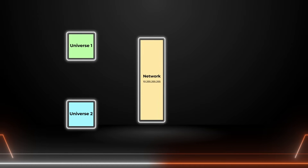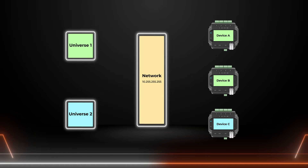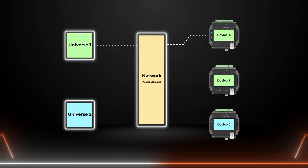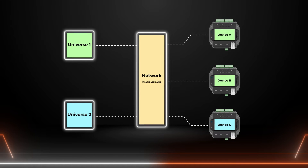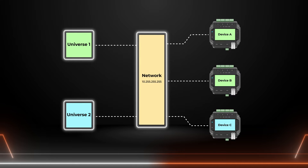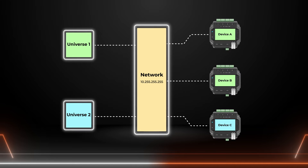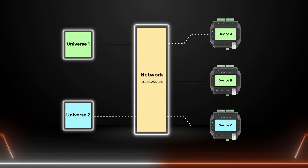For example, an EDMX generator is generating two universes of lighting effects which are to be delivered to three lighting devices. In this example, device A and device B both subscribe to universe 1 and device C subscribes to universe 2. The network switch listens to these multicast subscriptions so it knows where to forward each multicast EDMX universe that it receives.